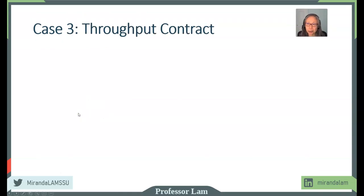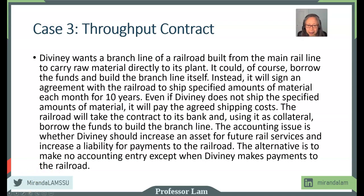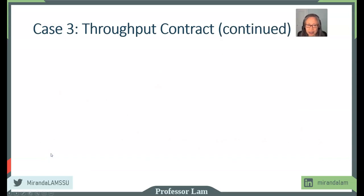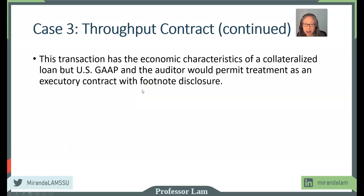Our next case is a throughput contract. Throughput contracts are very interesting — if you look at the transaction, it actually has all the characteristics of a loan liability. However, US GAAP does allow this type of contract to be treated as an executory contract, meaning you only have to disclose it in a footnote. You do not have to recognize it as a liability.